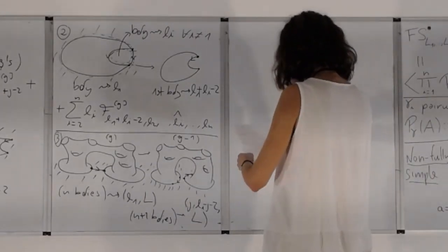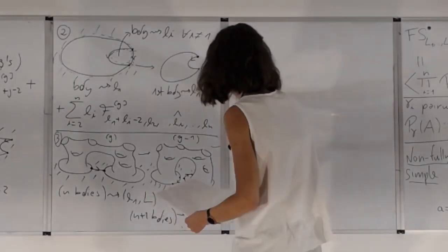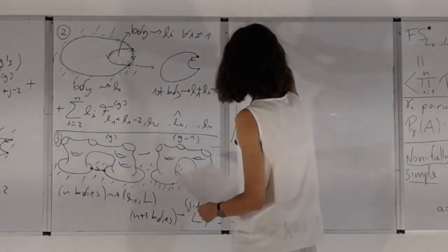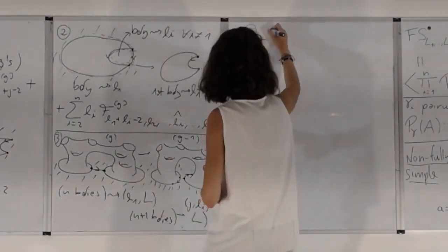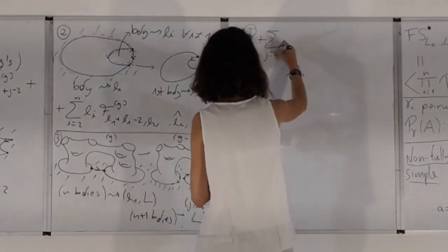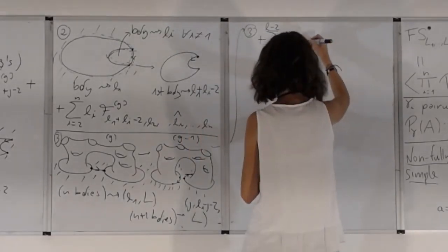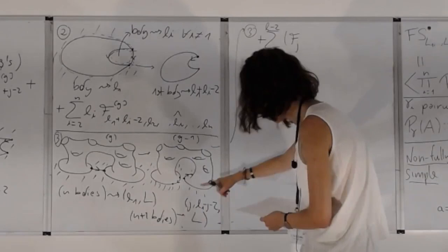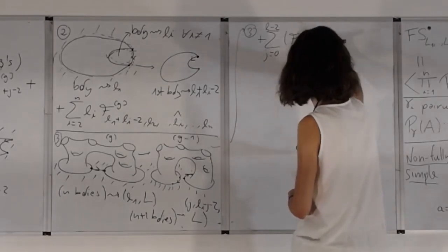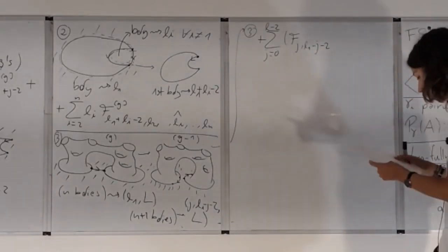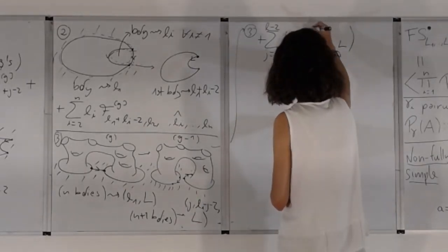The fourth type of term is the disconnected case — the same but where removing the edge disconnects the surface into two components. We sum over genus h from 0 to g, and over all partitions I of the remaining boundaries. The term in the generating series is a product of two correlators with split topology: one of genus h with boundaries indexed by I, and one of genus g minus h with the remaining boundaries.